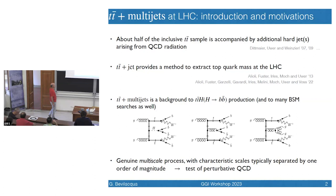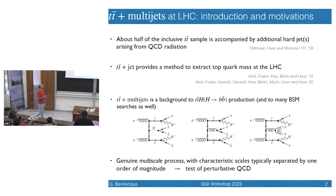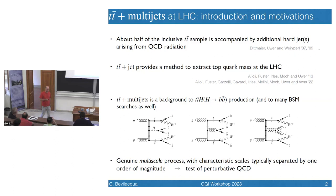First of all, tt̄H searches with Higgs decaying to bb̄ are important because they provide direct access to the top Yukawa coupling, and tt̄ plus two jets is an irreducible background, particularly when the two extra jets are b-flavored, since it brings the very same final state composition as the signal. Last but not least, from the theory point of view, this is a genuine multi-scale process. You can identify scales which are very separated — for example, the invariant mass of tt̄ and the pT of the hardest leading jet, which can have one order of magnitude separation. So this is an important test of perturbative QCD.